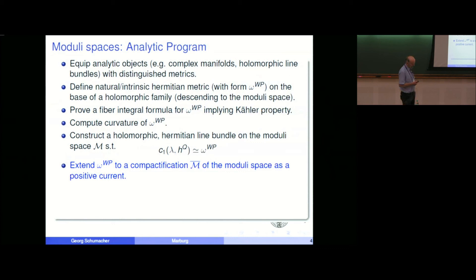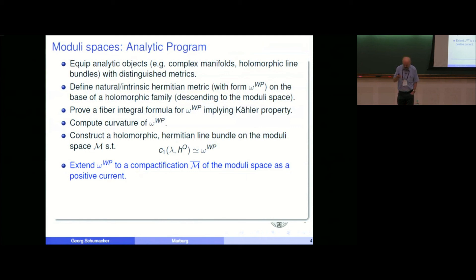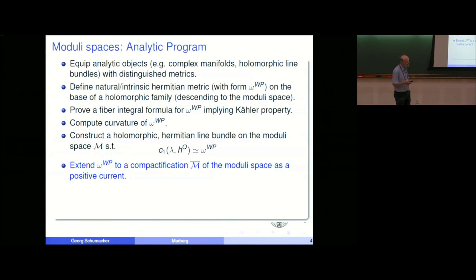Algebraic geometry will provide us, in most cases, with a compactification of a moduli space. What we want to do is see how we can extend the Weil-Petersson form to a compactification of the moduli space. For higher dimensional situations and more complicated objects, it is not so clear what the compactification of the moduli space will be. All we have to do is handle a certain boundary, and the boundary has to be blown up, unless one can describe the boundary of a moduli space to represent degenerate objects in a certain sense.